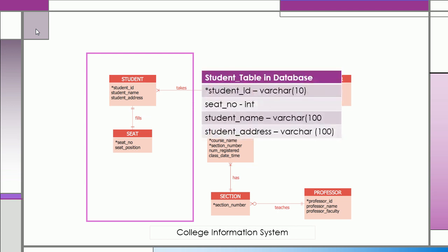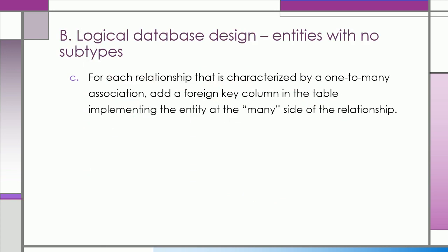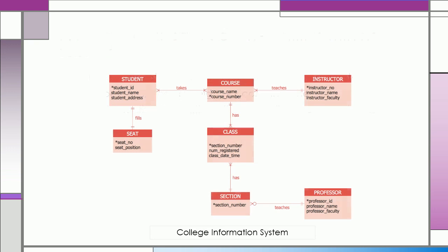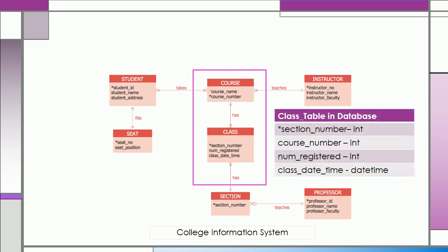Furthermore, for each relationship that is characterized by a one-to-many association, add a foreign key column in the table implementing the entity at the many side of the relationship. Try to take a look at the course and class entity of this database. The course and class entities has a one-to-many relationship. The class is implementing the many side of the relationship. Thus, it uses the course number as its foreign key.